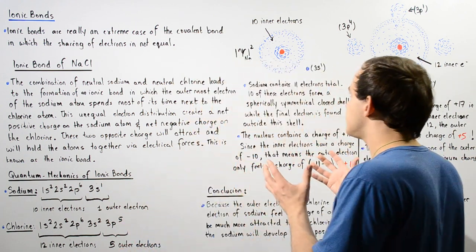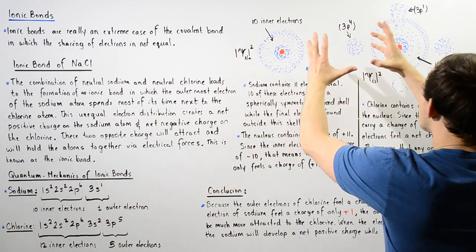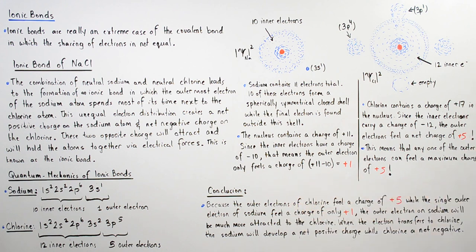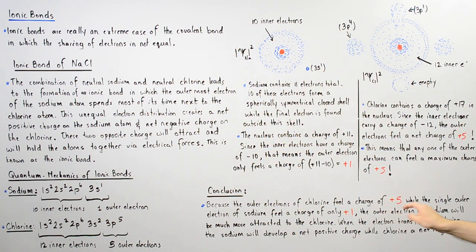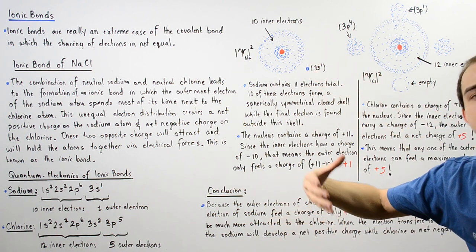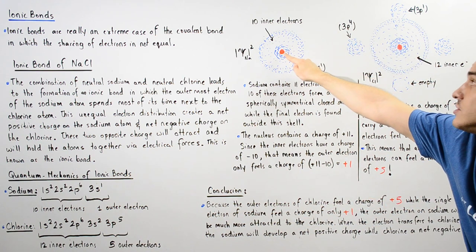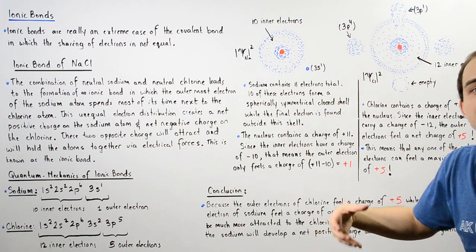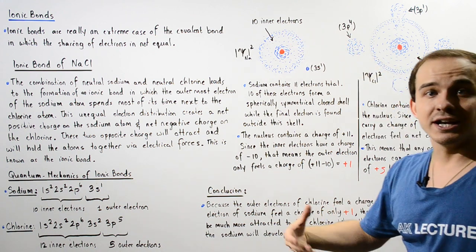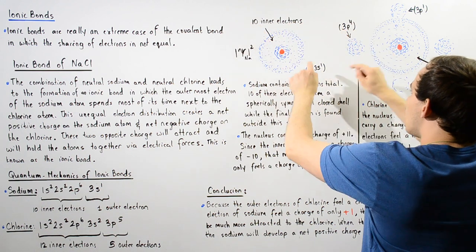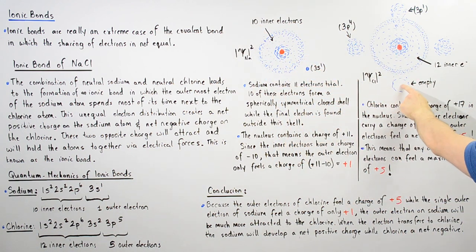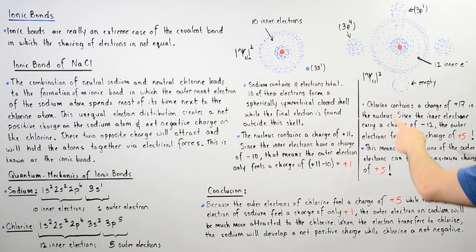What can we conclude from this information? When the sodium comes close to our chlorine atom: because the outer electrons of chlorine feel a charge of positive 5 while the single outer electron of the sodium atom feels a net charge of only positive 1, the outer electron of the sodium will be much more attracted to the chlorine nucleus than to the sodium nucleus. The chlorine nucleus will have a net charge of positive 5 while the sodium nucleus will only carry a net charge of positive 1. So when the sodium atom comes close, this electron will transfer to this orbital, and the electron will spend most of its time inside this orbital.